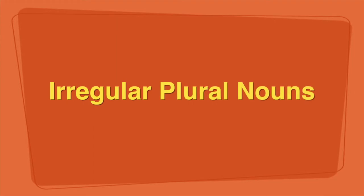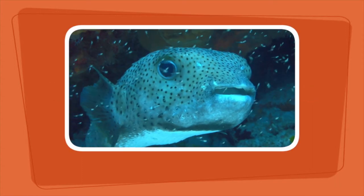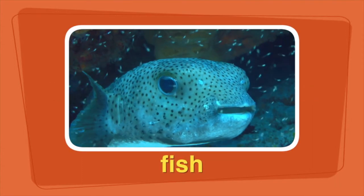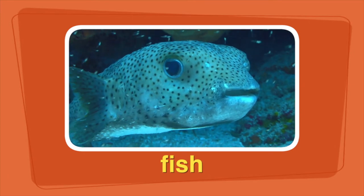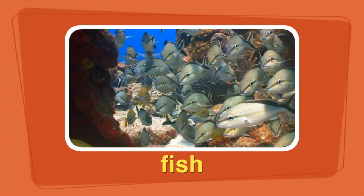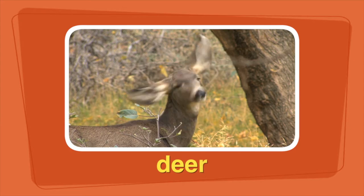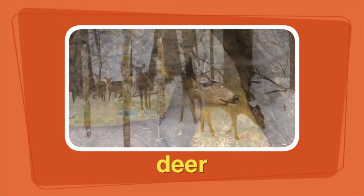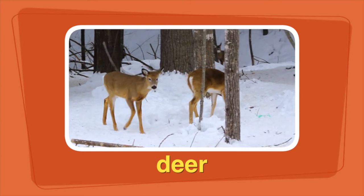Sometimes words don't follow the rules. Those words are called irregular plural nouns. Some words don't change when you make them plural, like the word fish. One fish swims at the bottom of the sea. Many fish swim at the bottom of the sea. The plural of deer is deer — no S is needed. The deer looked for food in the snow.